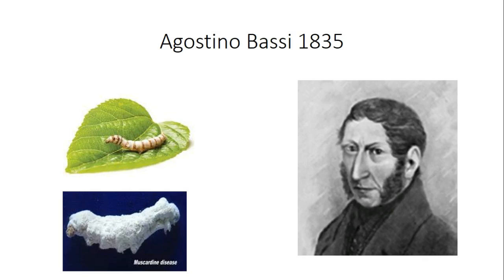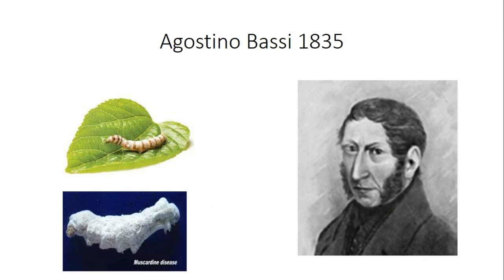Bassi noticed that some silkworms that had a disease had a fur-coat-like covering around them, and that fur coat was caused by a fungus — specifically Beauveria bassiana. The disease is called white muscardine. When he took these diseased silkworms and put them in with healthy silkworms, the healthy silkworms became diseased. He was able to determine that this fungus was causing disease.